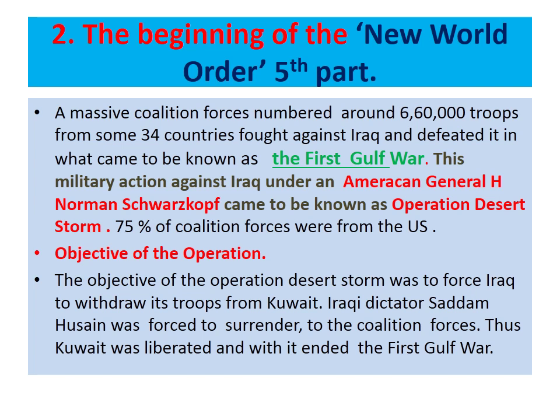A massive coalition force numbering 6,60,000 troops from some 34 countries fought against Iraq and defeated it in what came to be known as the First Gulf War. This military action under American General H. Norman Schwarzkopf came to be known as Operation Desert Storm, because 75% of coalition forces were from the US. The objective was to force Iraq to withdraw its troops from Kuwait. Iraqi dictator Saddam Hussein was forced to surrender, and Kuwait was liberated.